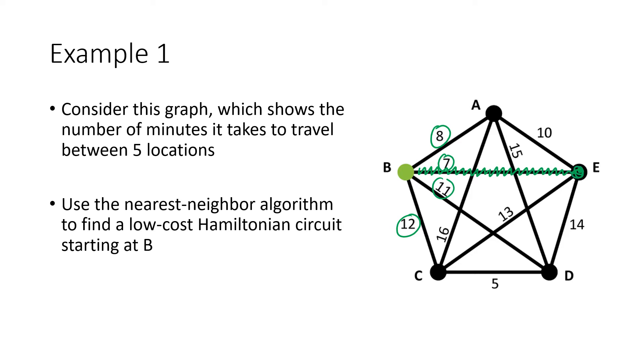And now from E, we look at all of the different travel times to the other vertices. So now it's 10 minutes from E to A. We don't want to go back to B because we haven't been to the other locations yet. Remember, we're looking for a Hamiltonian circuit, which means we want to visit all of the locations exactly once before we return to our starting point. So we don't want to go back to B. E to C is 13 minutes. E to D is 14 minutes. So because the lowest of those numbers is the 10, that means we're going to travel along this edge from E and go up to A. And now we're at A.